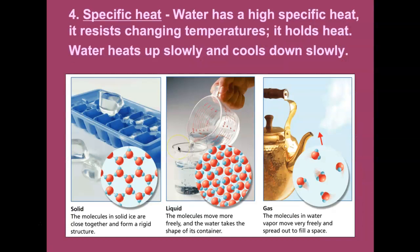Our fourth property is specific heat. Water has a high specific heat. Specific heat just means that it's the amount of energy that's required to increase the temperature of a substance by one degree Celsius. Water having a high specific heat means that it's going to resist changing temperatures. It's going to require a lot of energy in order for it to change just one degree in temperature.